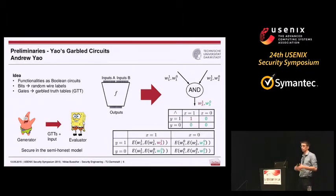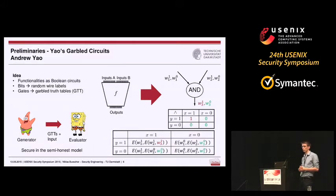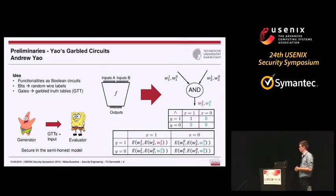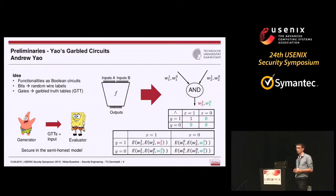The full protocol functions as follows. We have two parties: the generating party and the evaluating party. The generator creates garbled tables for all gates in the circuit and sends them to the evaluator. The generator then sends its own input to the evaluator, and both engage in an OT protocol, allowing the evaluator to decrypt a single path through the circuit to gain the result. The protocol is secure in the semi-honest setting, with multiple extensions for stronger security models.